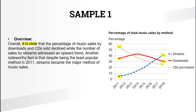Try to write every trend in one sentence, no matter how many lines there are. The second sentence of the overview starts with something like 'Another noteworthy fact is that...' For example: 'Another noticeable fact is that despite being the least popular method in 2011, streams became the major method of music sales.' It was the least popular and then it boomed and became more than everything else — that's a strong feature.